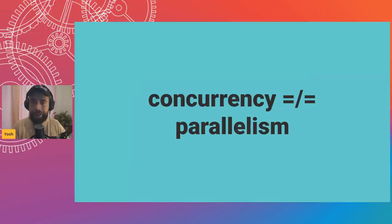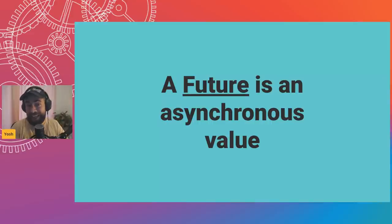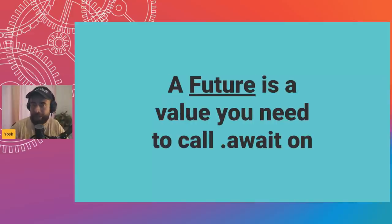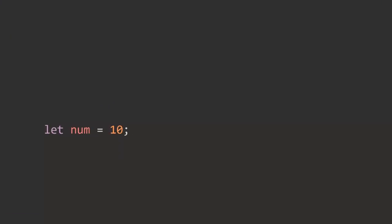Concurrency does not require multiple threads. You can structure a program to use just one thread but still have stuff executing concurrently. So what's a future? A future is an asynchronous value — a value that will only become a value after you call .await on it. For example: let num = 10 is the synchronous version. The async version is a future that will resolve to the value 10, and when you await it, it resolves and you can assign it to a variable binding.